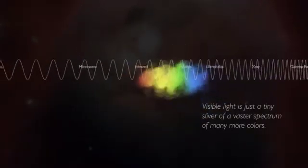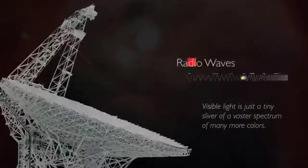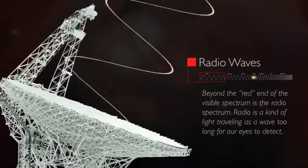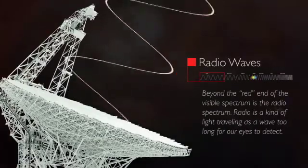Well, not all photons are visible to us. Visible light is just a tiny sliver of a vaster spectrum of many more colors. Beyond the red end of the visible spectrum is the radio spectrum. Radio is a kind of light traveling as a wave too long for our eyes to detect.